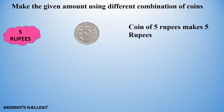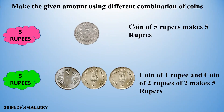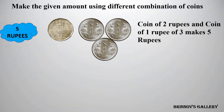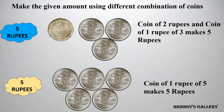5 Rupees: coin of 5 Rupees makes 5 Rupees. Coin of 1 Rupee and coin of 2 Rupees, two of them, makes 5 Rupees. Coin of 2 Rupees and coin of 1 Rupee, three of them, makes 5 Rupees. Coin of 1 Rupee, five of them, makes 5 Rupees.